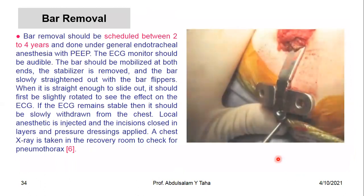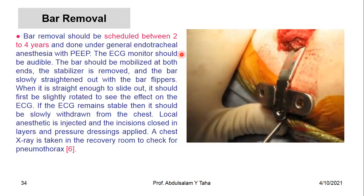Bar removal is scheduled to be performed between 2 and 4 years after the operation. It is done as an outpatient procedure under general anesthesia and under ECG monitoring. The stabilizer is removed first, and the bar is withdrawn carefully with ECG monitoring. After that, the wounds are closed and the patient is discharged the same day.